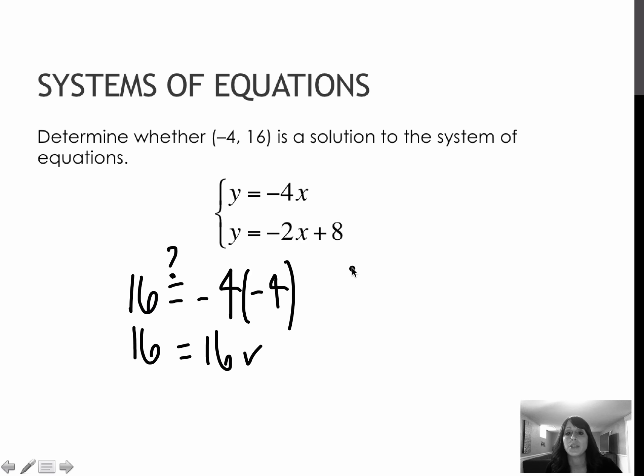16 equals -2 times -4 plus 8. And I'm asking, are they equal? Negative 2 times negative 4 is 8 plus 8 gives me 16 equals 16, which is correct. So yes, because this point lies on both lines, it is a solution to the system of equations.